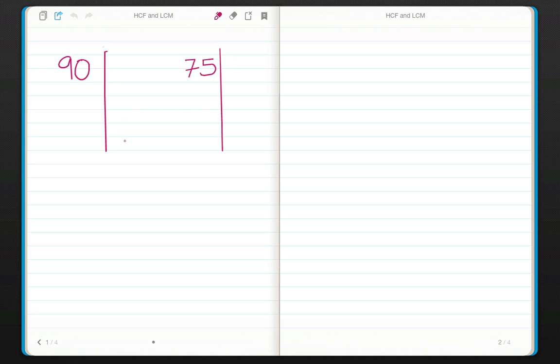So we're now ready to start our prime factor decomposition. Let's start with 90. We think of a prime number that goes into 90 and that's 2. So 2 goes into 90, 45 times.